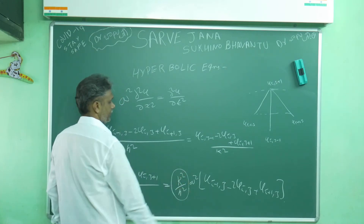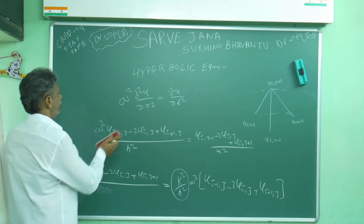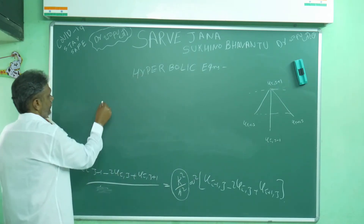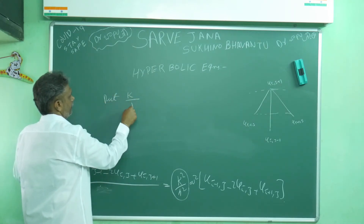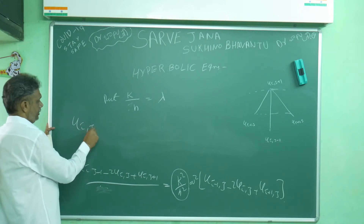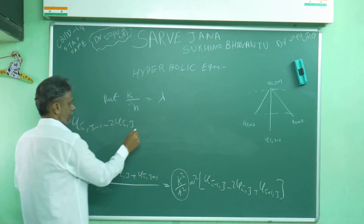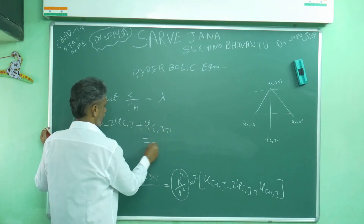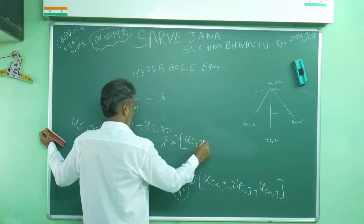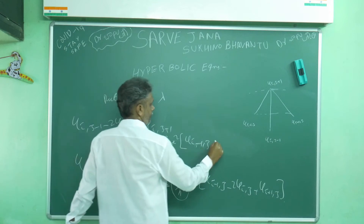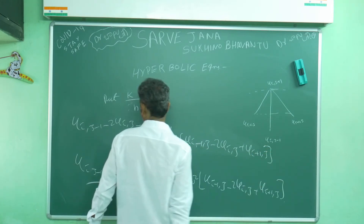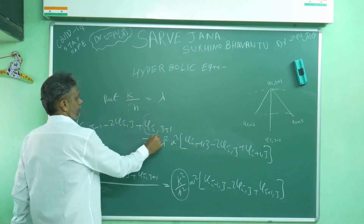Let λ = k/h. The equation becomes: u(i,j-1) - 2u(i,j) + u(i,j+1) = λ²a² [u(i-1,j) - 2u(i,j) + u(i+1,j)].